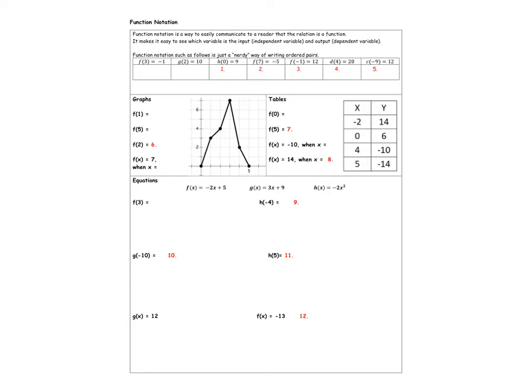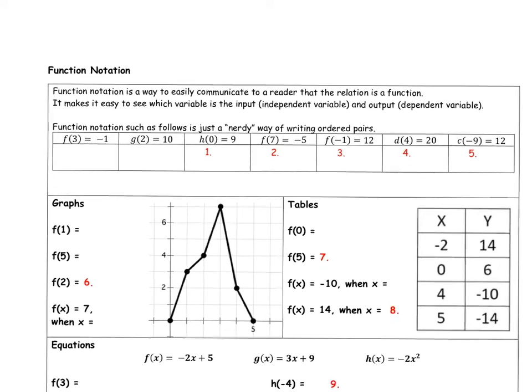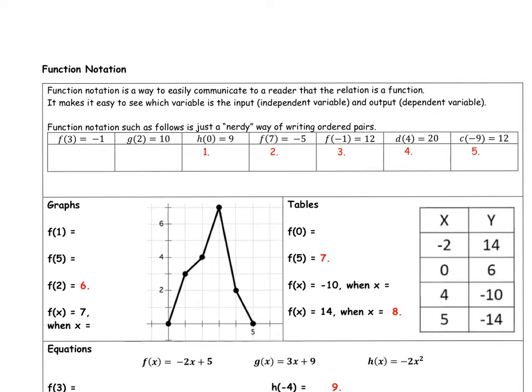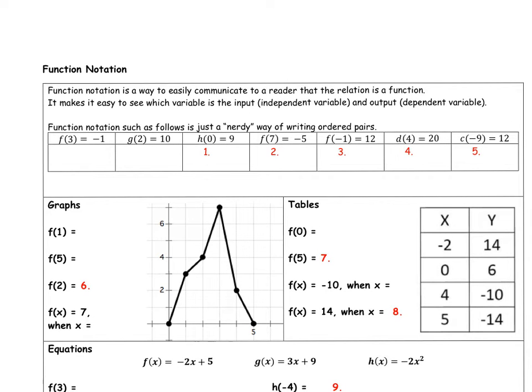But I need to see your answers to these 16 questions, okay? That way I can give you some credit for it. Looking at the very top part, it says function notation is a way to easily communicate to a reader that the relation is a function, hence the name function notation. It makes it easy to see which variable is the input variable and the output variable.